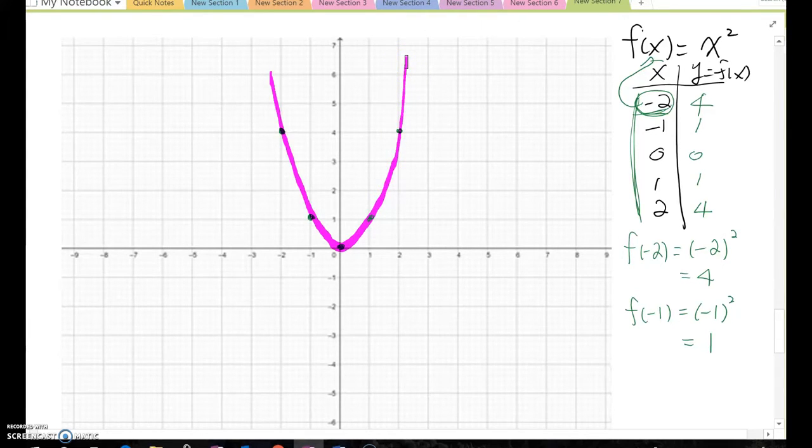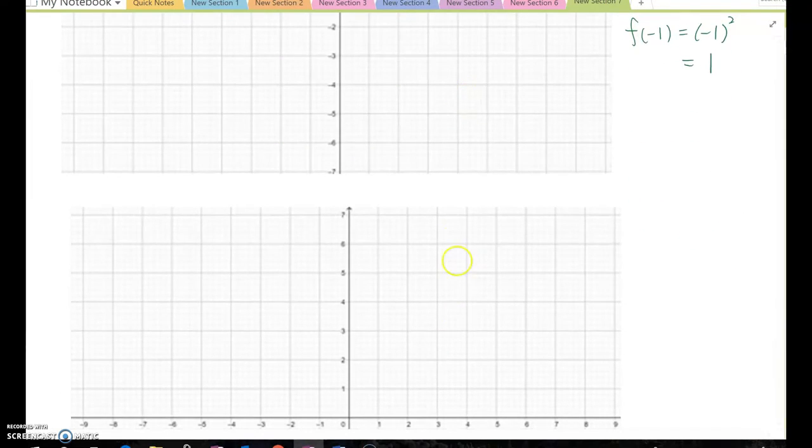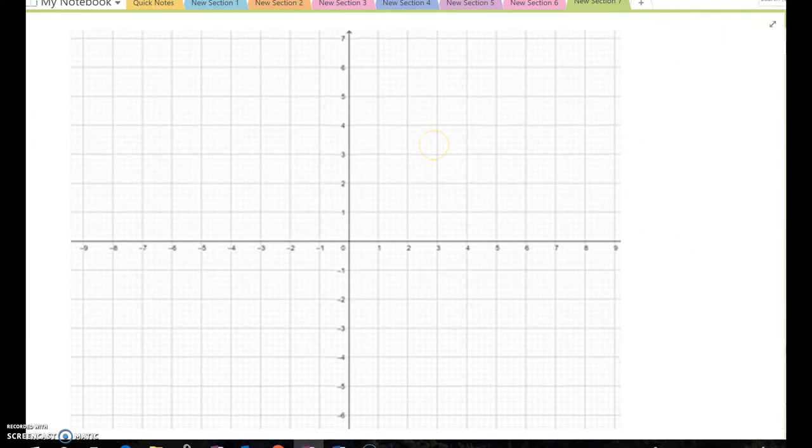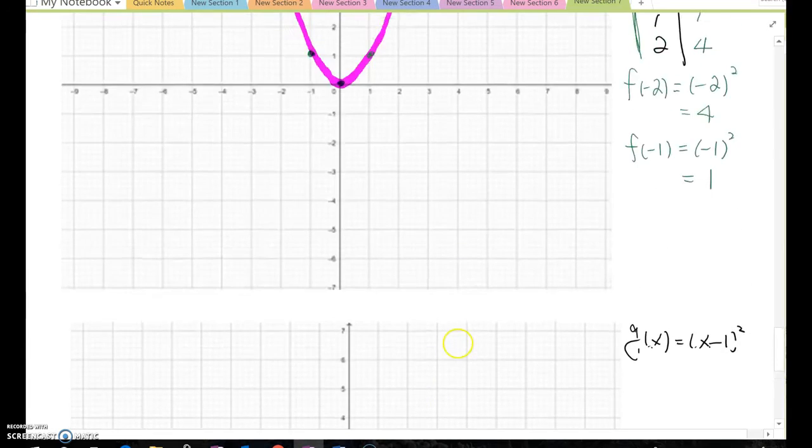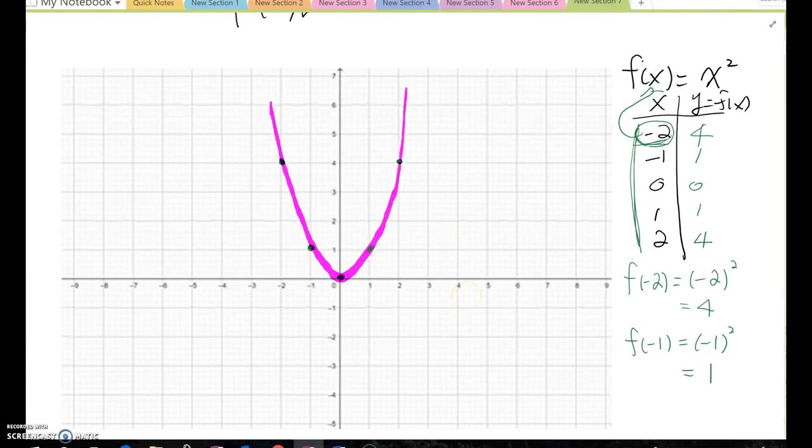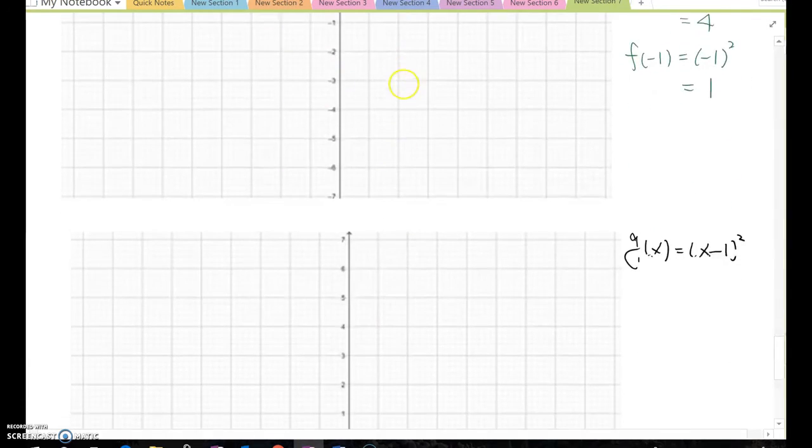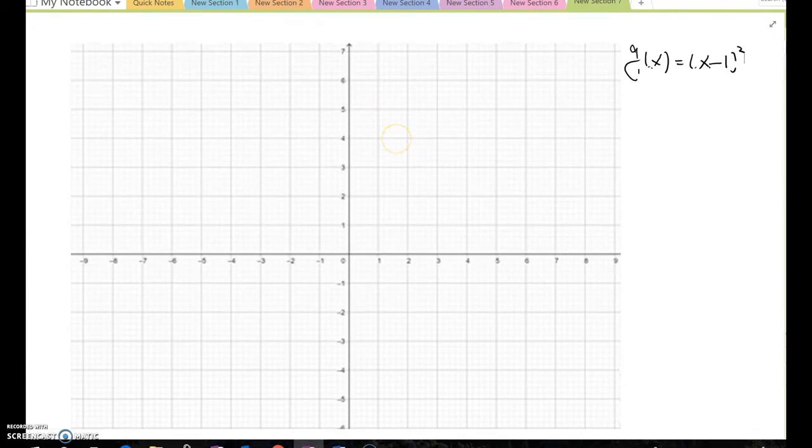Then let's think about another function. Maybe g(x) equal to (x-1)². I'm going to choose similar values from the f(x) function. I choose like negative two, negative one, zero, one, and two, so I will choose similar values and then find the ordered pairs as well.